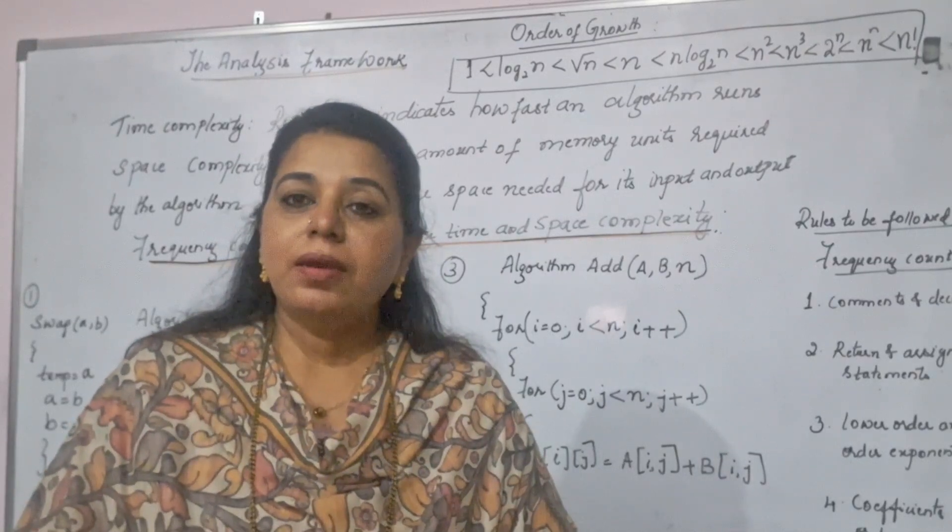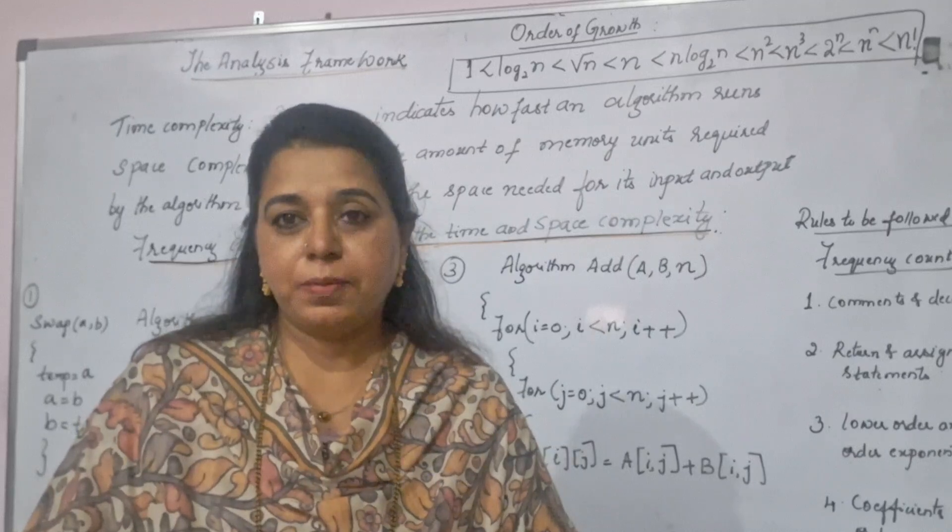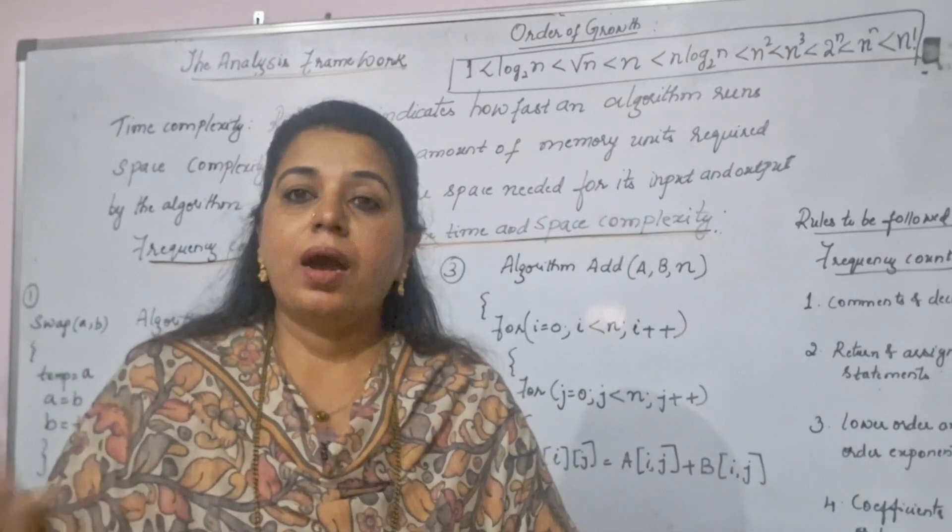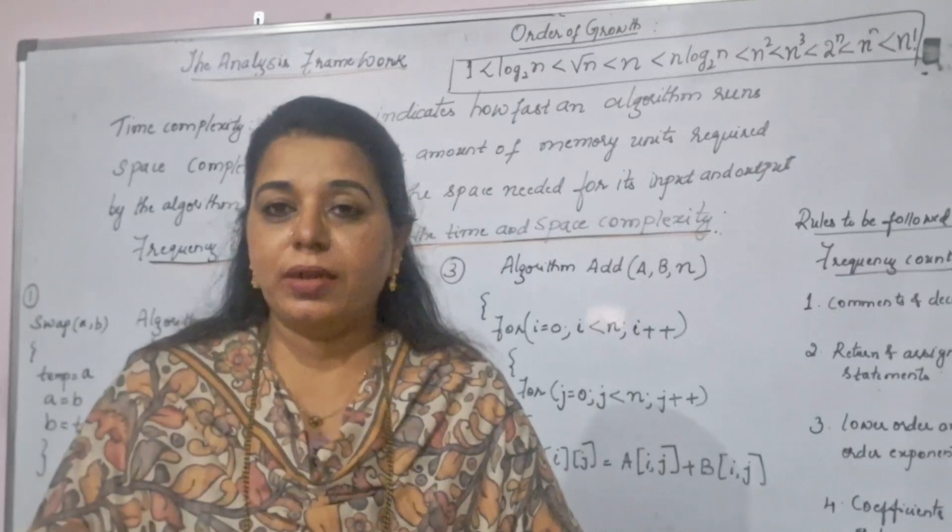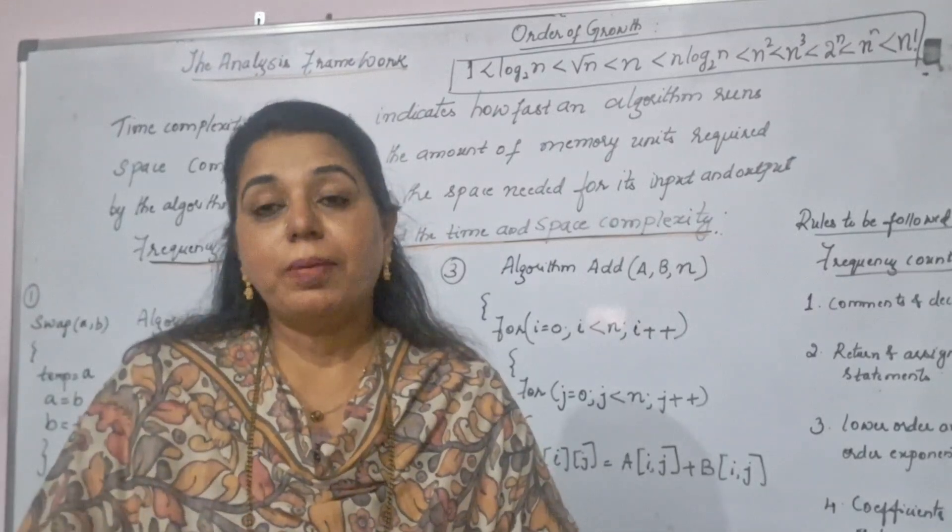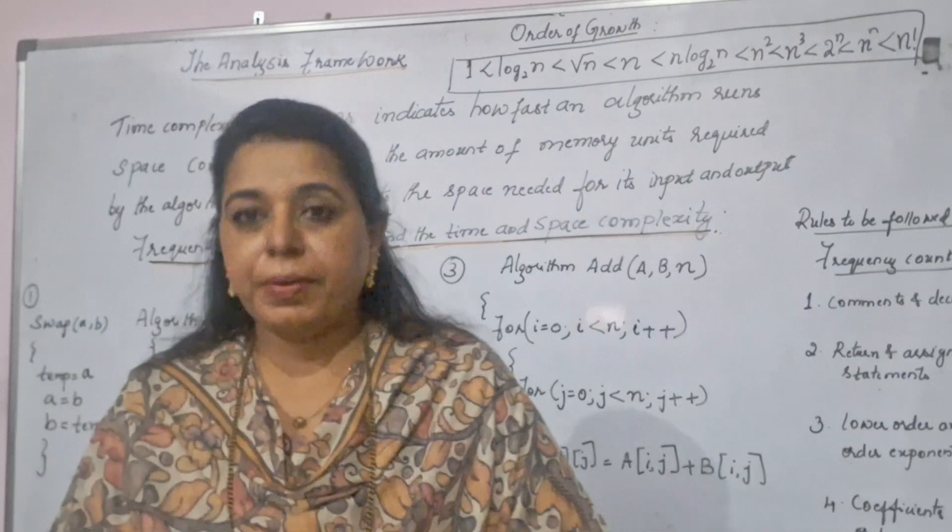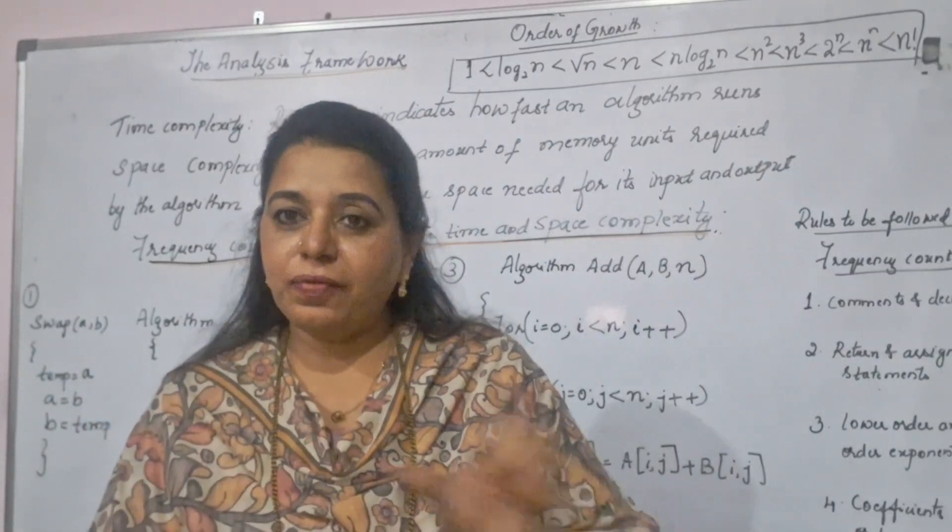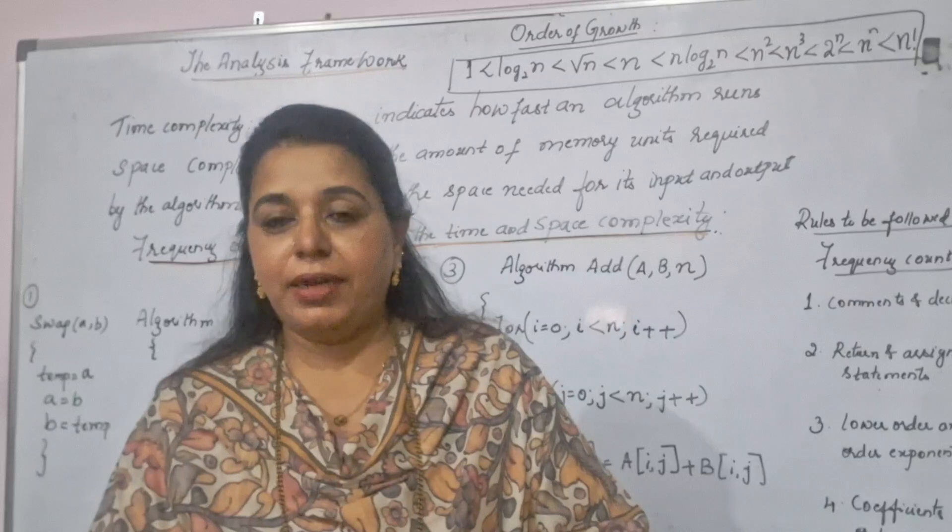That is basically, we have to count the number of steps that are there in each of the algorithms and how much time each step in the algorithm takes in order to complete its job. And that particular running time, you will be representing with a function. So, in general, we call it as order of that function, whatever running time you get.